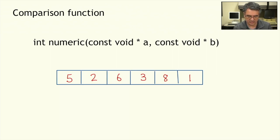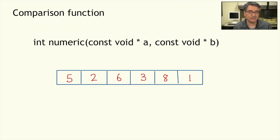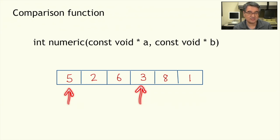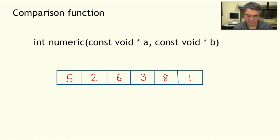Think back to the way bubble sort worked. During the bubble sort algorithm, it needs to compare two elements and decide whether they need to be swapped or left as is. In the quick sort algorithm, it might not be comparing two adjacent elements — it could be looking at two elements that are somewhere in the array. The idea is the same: do these elements need to be swapped or can they be left where they are? That's what these A and B are — they are pointers to two elements of the array.